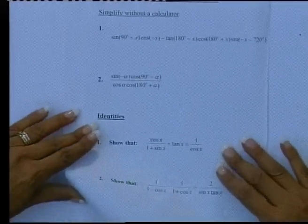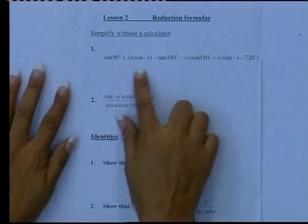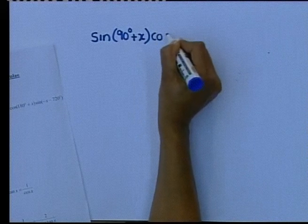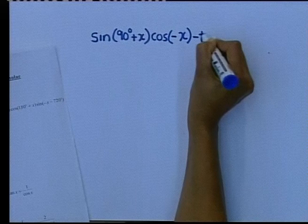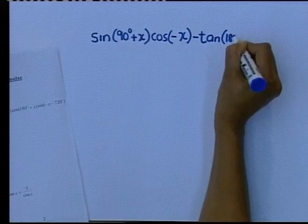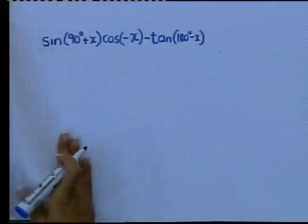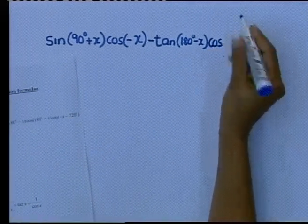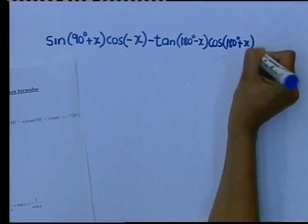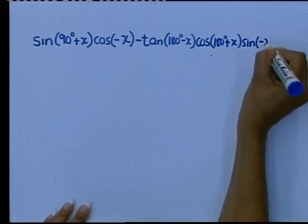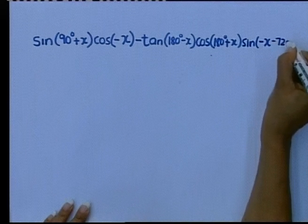I'm quite excited to do this question now because we just went through which quadrant. So, if everybody can write this down: it is the sin of (90 plus x), or we can use x — it's the same thing — times the cos of negative x, minus the tan of (180 degrees minus x), times the cos of (180 plus x), and last but not least, the sin of (negative x minus 720).